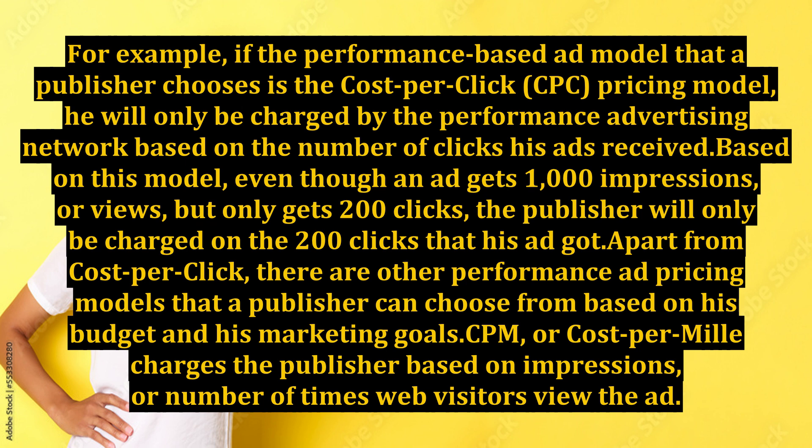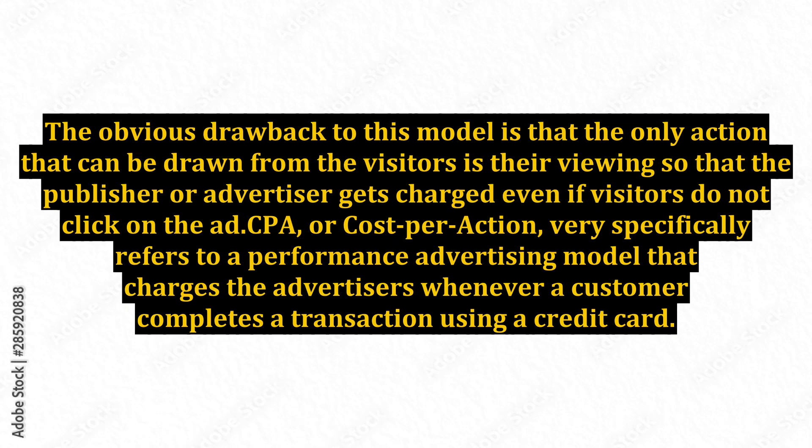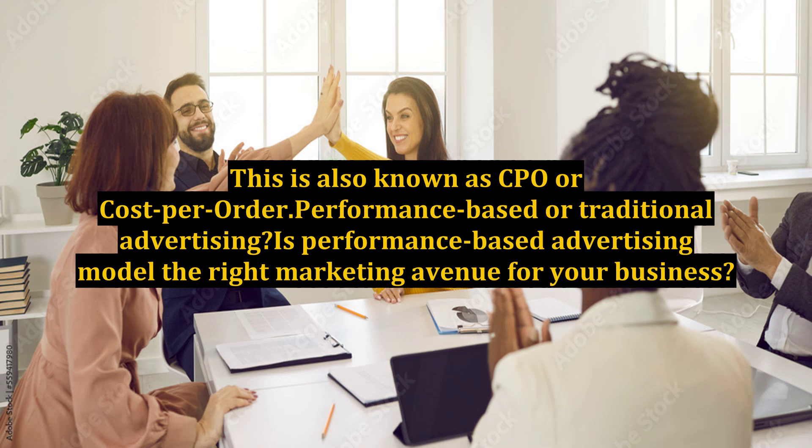Apart from cost-per-click, there are other performance ad pricing models that a publisher can choose from based on his budget and his marketing goals. CPM, or cost-per-mille, charges the publisher based on impressions or number of times web visitors view the ad. The obvious drawback to this model is that the only action drawn from visitors is their viewing, so the publisher gets charged even if visitors do not click on the ad. CPA, or cost-per-action, specifically refers to a performance advertising model that charges the advertiser whenever a customer completes a transaction using a credit card. This is also known as CPO, or cost-per-order.